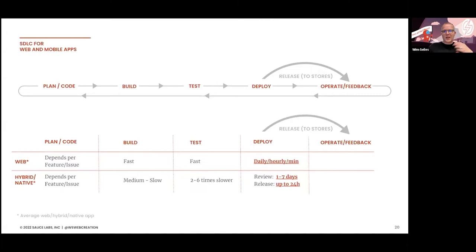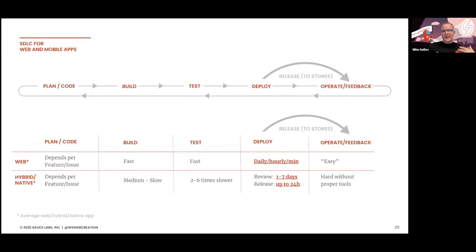If something happens in production, for web it's pretty easy to debug — you can spin up whatever VM you want, a Mac with Safari, and figure out what's happening for your customers. But it's not that easy for mobile devices without the proper tools. The time to market, especially with quality, is really, really important here.